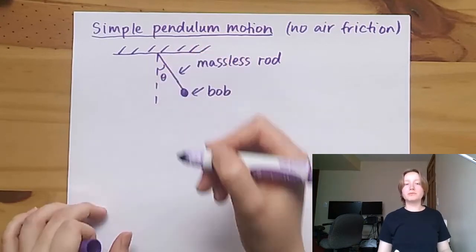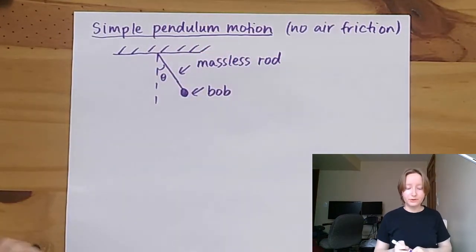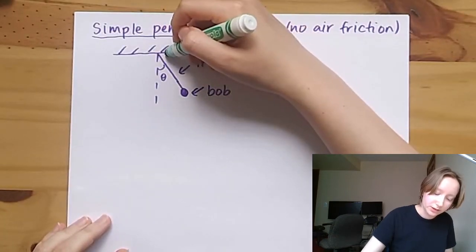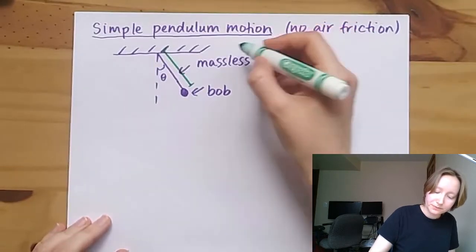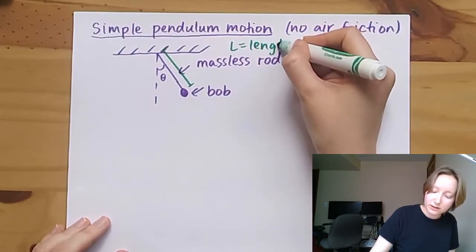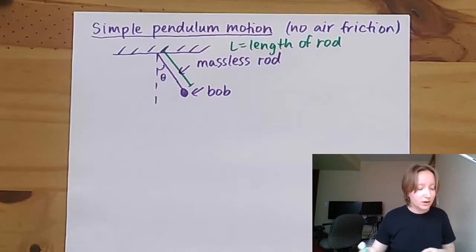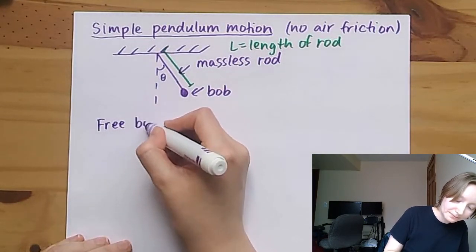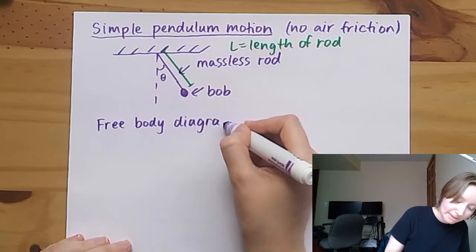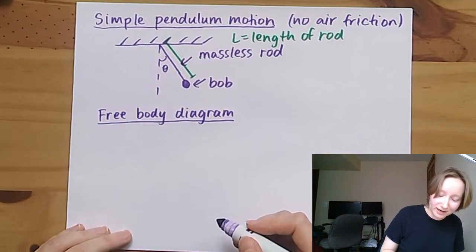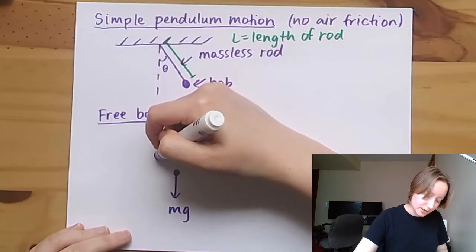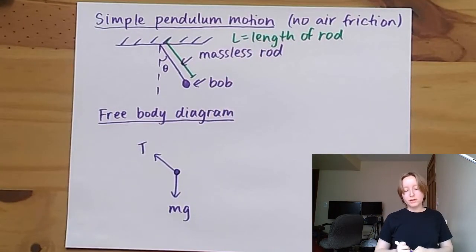One physical variable we can define is the angular displacement theta of the bob from the vertical. We also have the length of the massless rod, which is L. There is a gravitational force on the bob and a tension force on the bob as well. Let's draw a free body diagram — my bob is a free body, and the forces acting on it are gravitational force mg and tension force T.